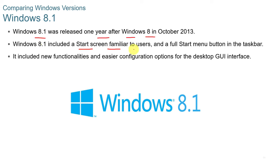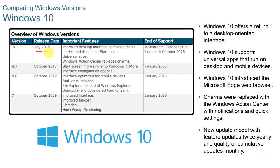Windows 8.1 included a start screen familiar to users, much like Windows 7, with a full start menu button in the taskbar. It had new functionalities and an easier configuration option for the desktop GUI. Windows 10 was released in July 2015, improving the desktop interface with universal apps, a Windows Action Center replacing the Charms, the Microsoft Edge browser, and a new update model with feature updates twice yearly and cumulative updates monthly.